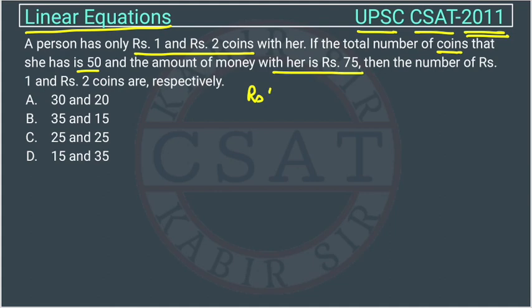The question is there are rupee 1 coin and rupee 2 coin. The quantity can be, suppose the number is Q1 plus Q2. They have given Q1 plus Q2 is equal to 50.